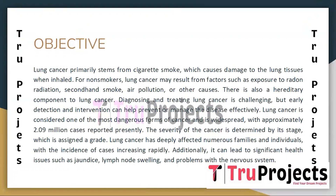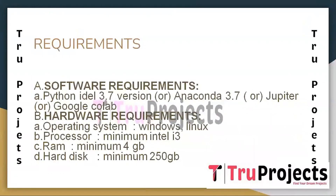Lung cancer is considered one of the most dangerous forms of cancer, with approximately 2 million reported cases presently. The severity is determined by its stage, which is assigned a grade. Lung cancer has deeply impacted many families and individuals, with incidence of cases increasingly rapid. It can also lead to significant health issues such as jaundice, swelling, and problems with the nervous system.